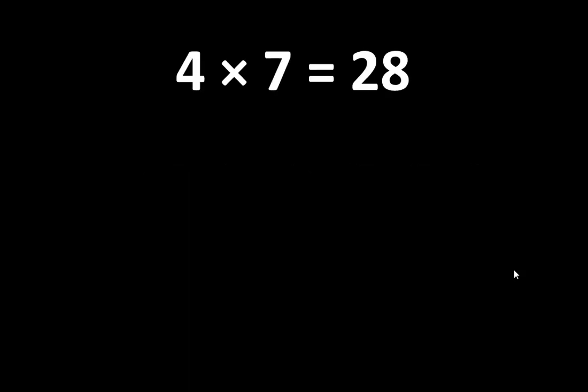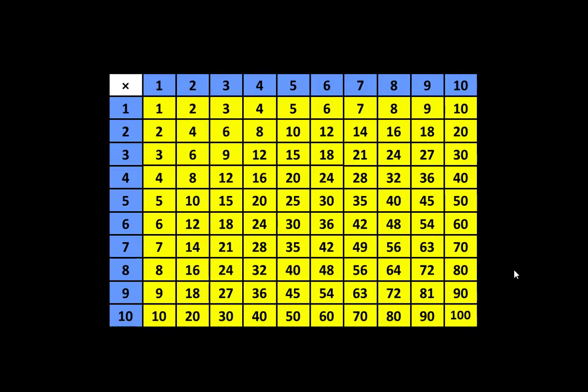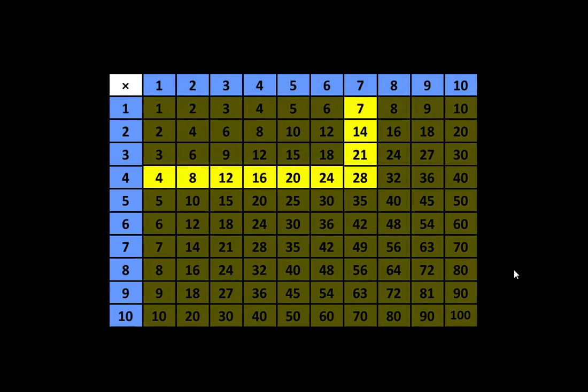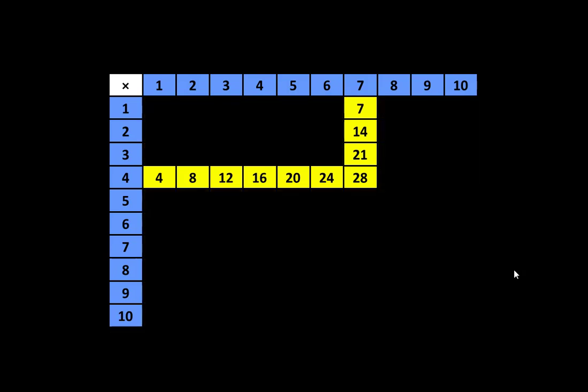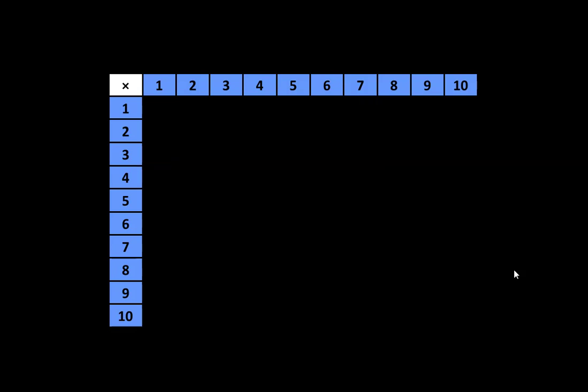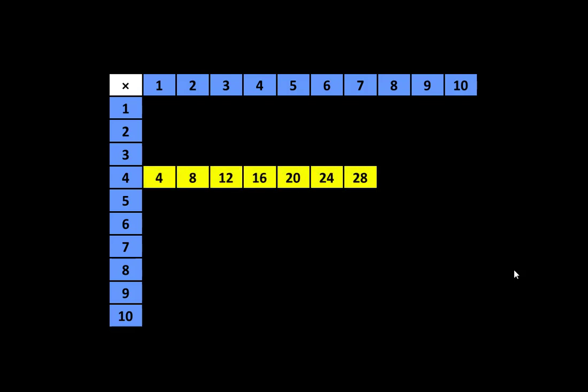4 x 7 is equal to 28, and there are many more important ideas. When we look on the multiplication table, we can see that 4 x 7 is equal to 28. 28 is a multiple of 4, and 28 is also a multiple of 7. In fact, if you look closely, you'll find another connection: 28 is the 7th multiple of 4.